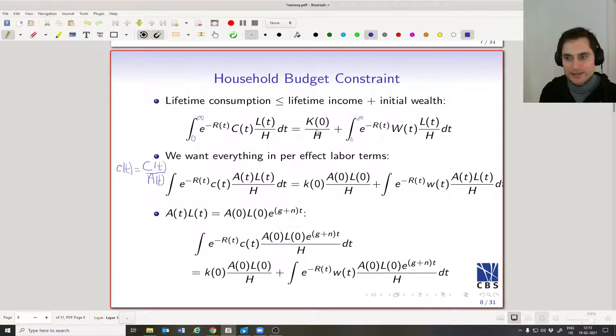And we're going to do the same trick on everything in this equation. So here we have a k zero. Well, let's multiply and divide by A_0 L_0. That's the amount of human capital at time zero. And then this little k, I think we already defined it, is big K divided by AL.